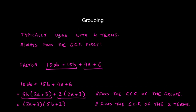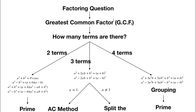Grouping is a technique typically used with an even number of terms. You can group with two terms, but that's really just taking the GCF out. More often, grouping is used with four, six, eight, or any even number of terms, because we need to group in packages of two. If we have an odd number of terms, one term is left over and we cannot use grouping. So always check first to see if there is a GCF — if there is, factor it out.